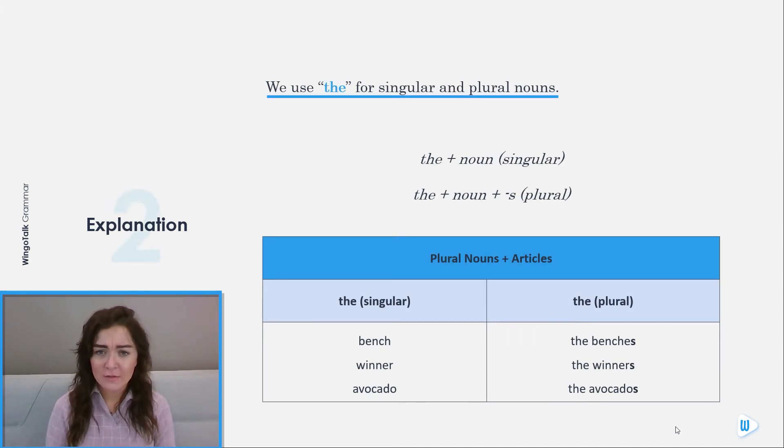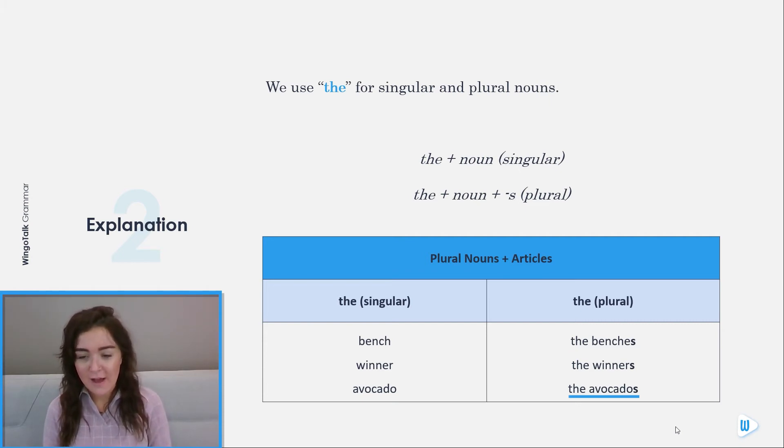We use the for singular and plural nouns. The plus noun is singular. The plus noun plus s is plural. So, the bench, the winner, the avocado. Plural: the benches, the winners, the avocados.